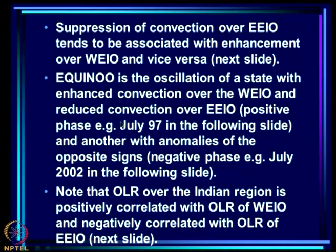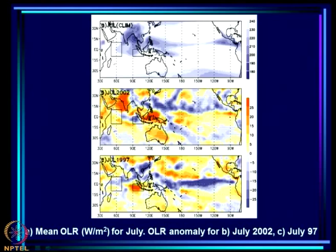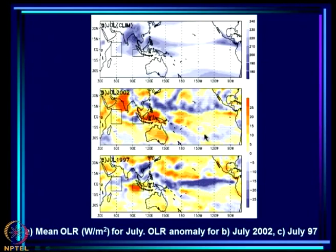Looking at July 1997, the OLR anomalies correspond to very big suppression over the east and enhancement over the west. This is referred to as the positive phase of the equatorial Indian Ocean oscillation. The opposite, where OLR anomaly over WEIO is positive (convection suppressed over WEIO) and enhanced over EEIO, is the negative phase, which corresponds to the 2002 case. So EQUINOE corresponds to oscillation between these two states — positive phase and negative phase.